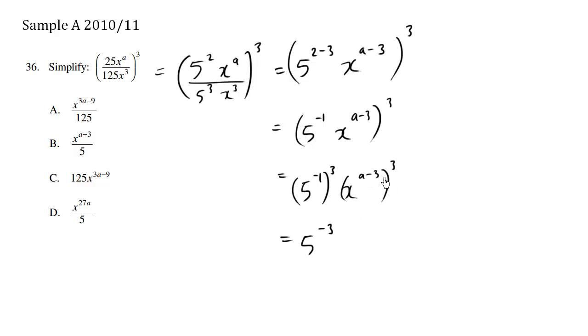And when we distribute, we multiply 3 times a, 3 times negative 3, we get x to the 3a minus 9.